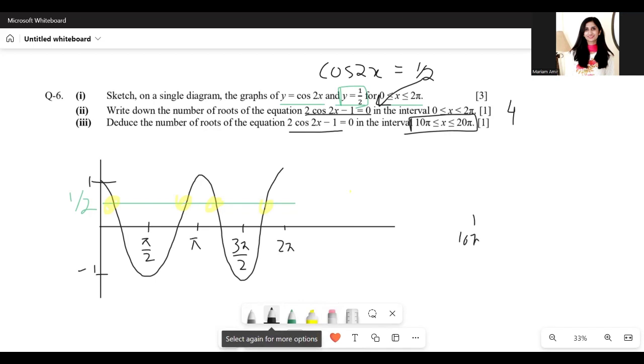And then we see how many points of intersection do we have. We need to see how many points of intersection we get in this domain.